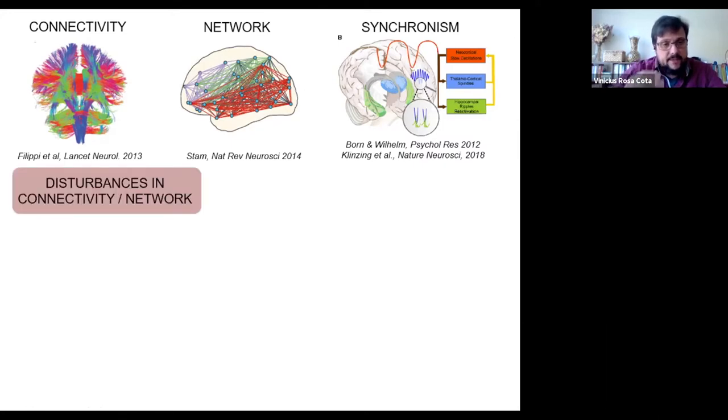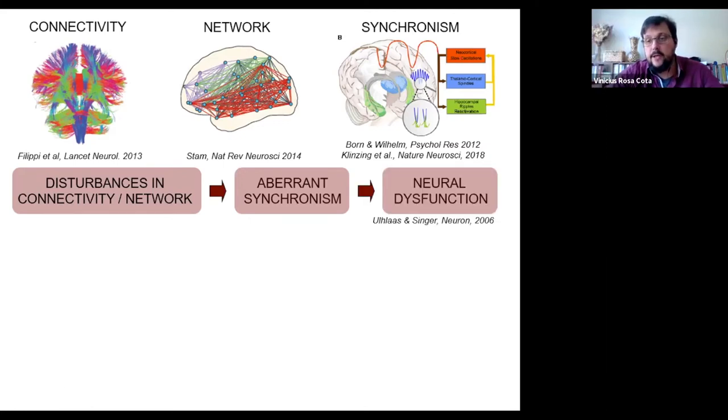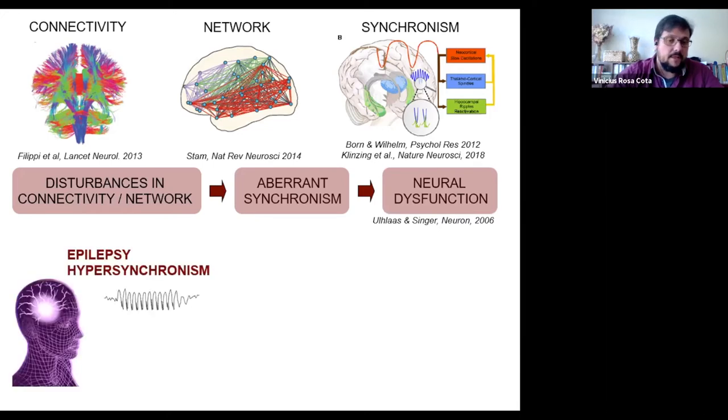If there is a disturbance in connectivity or in these networks, this will lead to aberrant levels of synchronization. It can be up-regulated or down-regulated, and by its turn, it will lead to neural dysfunction. Particularly, epilepsy can be understood as a neural dysfunction of synchronism, particularly hypersynchronism. Epilepsy is a hypersynchronization process that leads to seizures and all the other symptoms.